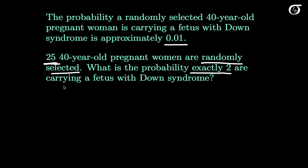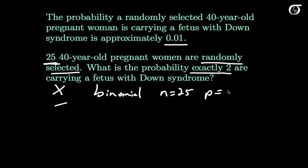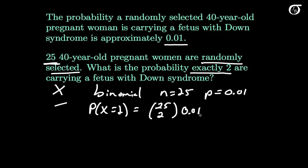If we let the random variable x represent the number of these women carrying a fetus with Down syndrome, then x has a binomial distribution with n = 25 and p = 0.01. The probability that x equals 2 goes into our binomial formula: n choose x, times p to the x, times (1 - p) to the (n - x). This works out to 0.0238.